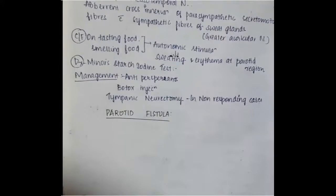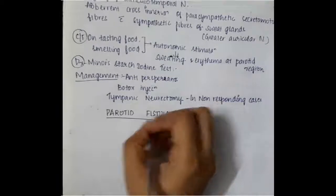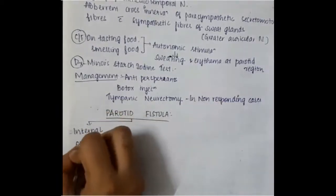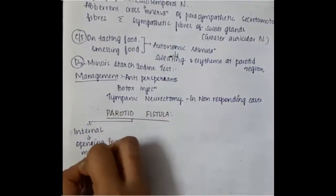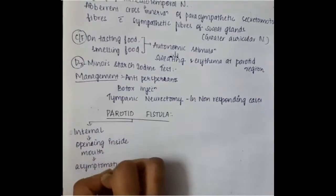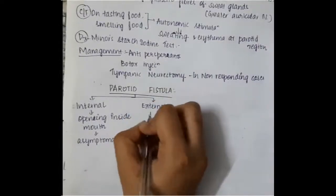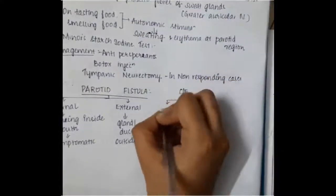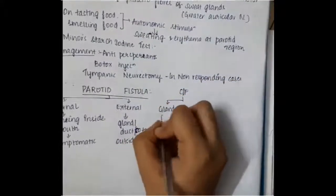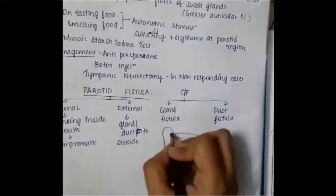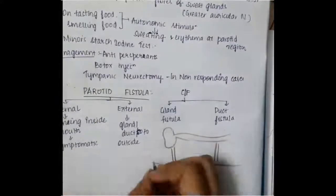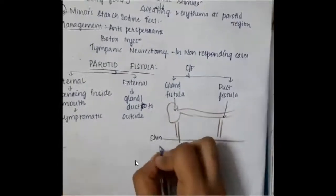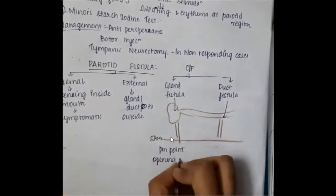Now, the next topic is about parotid fistula. Parotid fistula is of two types. One, we have internal parotid fistula where the opening of fistula is inside the mouth and it is asymptomatic. In external fistula, the opening is outside the duct. Clinical features are we have glandular fistula and also ductal fistula. If this is the gland, this is the glandular fistula and this is the ductal fistula.